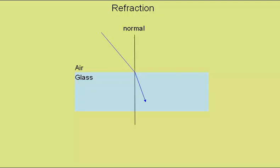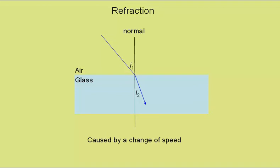If we mark on a normal at 90 degrees to the glass-air interface here, we will call this angle I1, and this angle I2. Refraction is caused by a change of speed. The ray of light actually travels much slower in glass than it does in air.